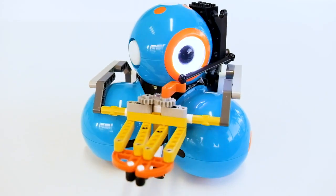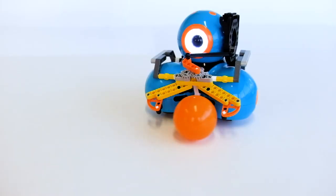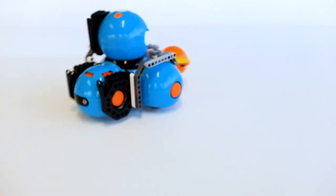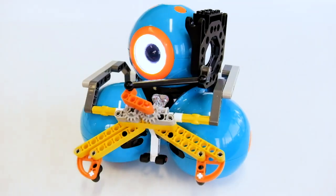Let's find out how the gripper functions. The gripper gives Dash the ability to grip objects. So, what makes the gripper grip?